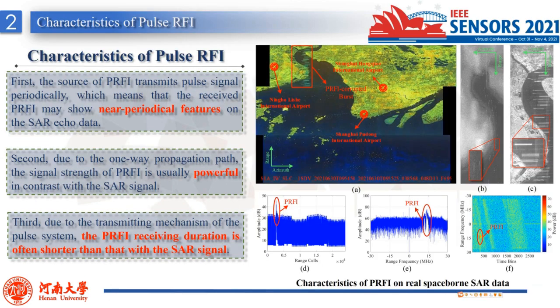PRFI has three characteristics. First, due to the source of PRFI transmitting pulsed signals periodically, the received PRFI may show near-periodic features on the SAR echo data. Second, due to the one-way propagation path, the signal strength of PRFI is usually powerful in contrast with the SAR signal. Third, due to the transmitting mechanism of the pulse system, the PRFI receiving duration is even shorter than that of the SAR signal.